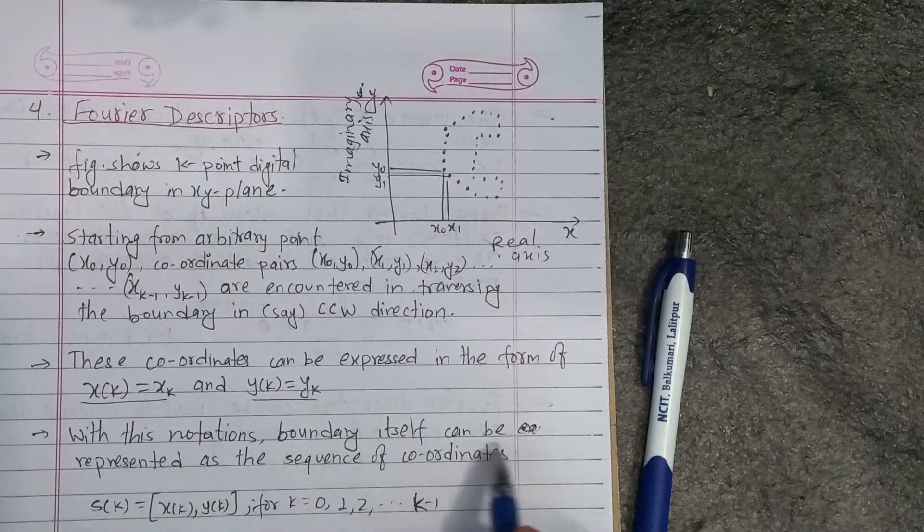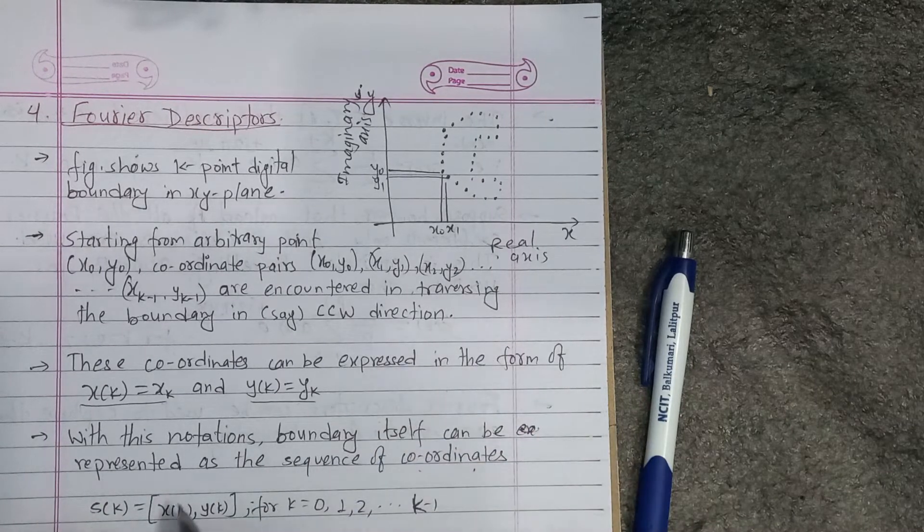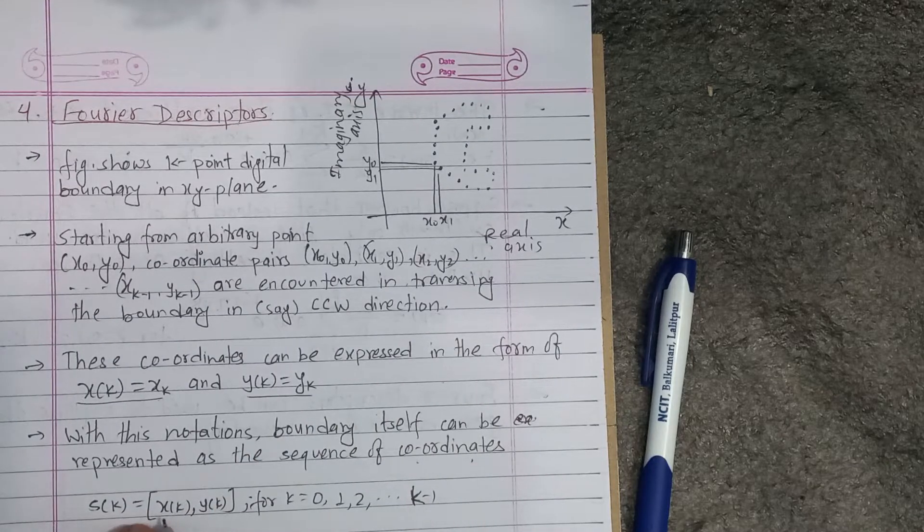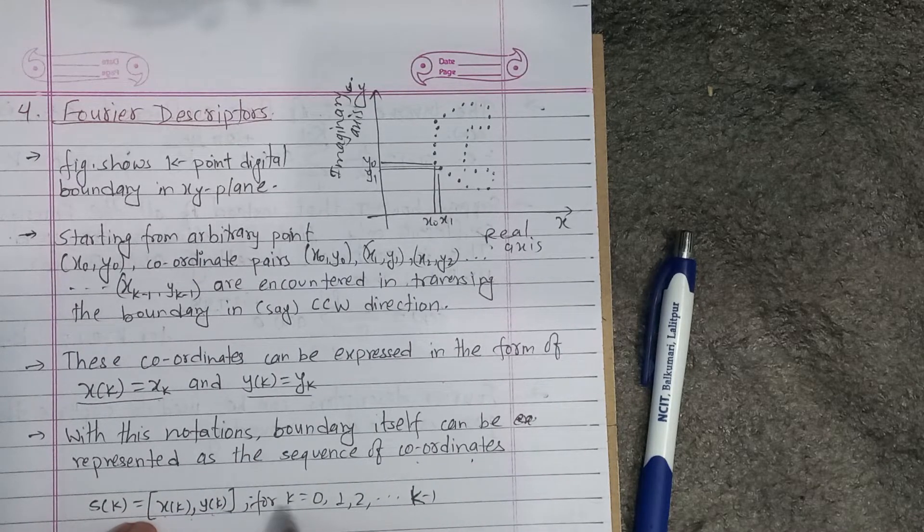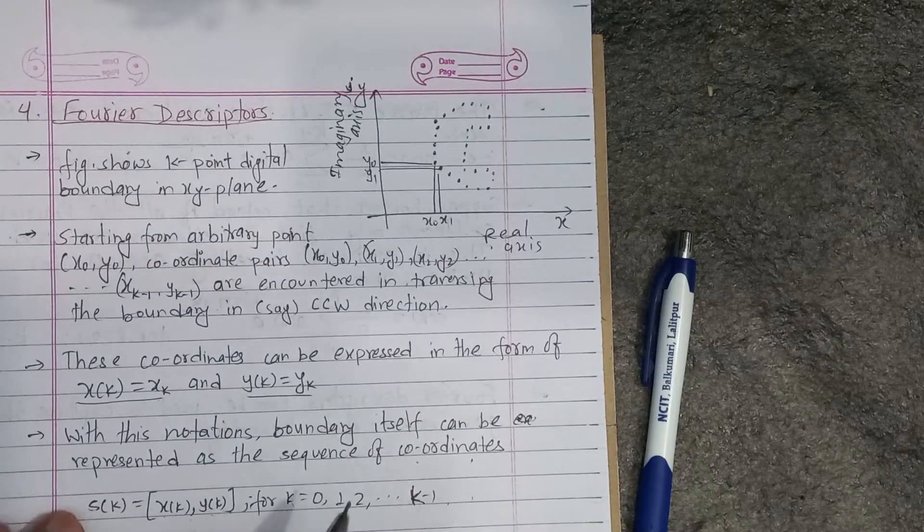These coordinates can be expressed in the form of xk equals to xk and yk equals to yk. With these notations, boundary itself can be represented as the sequence of coordinates. This is k equals to (xk, yk), k equals to 0 to k minus 1.